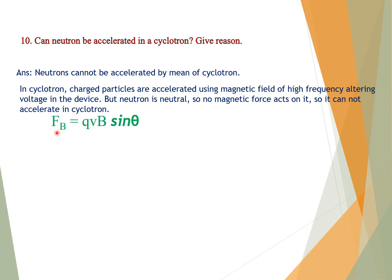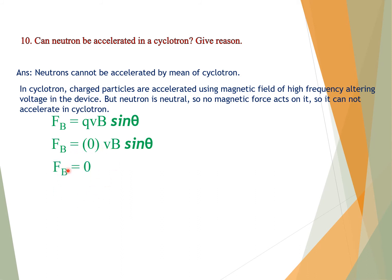Magnetic force = QVB sinθ. Since a neutron has zero charge (Q = 0), the magnetic force = 0 × VB sinθ = 0. Therefore the magnetic force on the neutron is zero, and neutrons cannot be accelerated by means of a cyclotron.